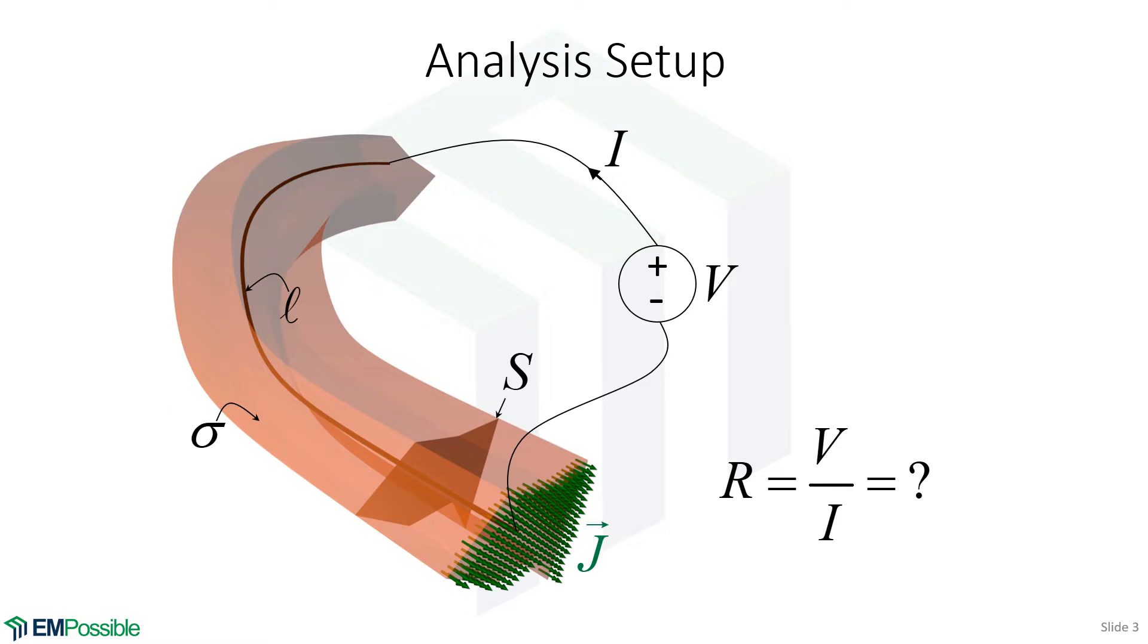And so what we do then, we apply a voltage V, it passes a current I, so V over I gives us the resistance, but how can we calculate what that resistance is from an electromagnetic analysis?